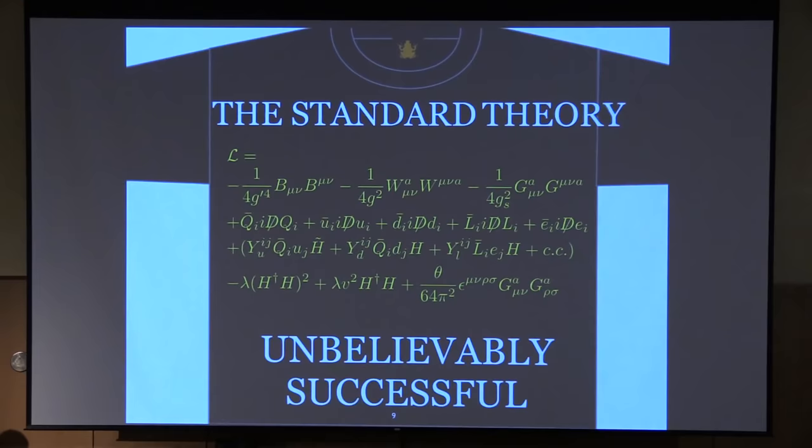The standard model summarizes what we've learned from 100 years of search for the basic building blocks of nature. They are the quarks that make up the nuclei of atoms and they are the electron and its partner, the neutrino. These are called leptons, the electron and its neutrino, the pair together with a pair of quarks.